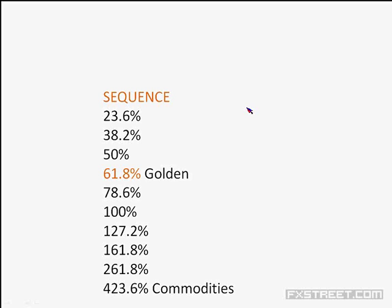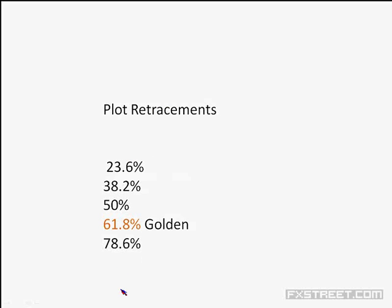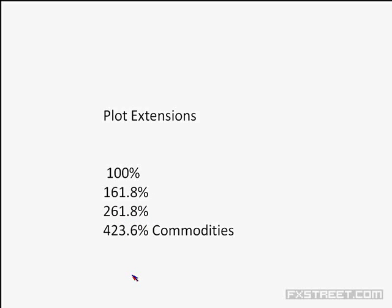The sequence is basically 100%. These are our retracement numbers: 23.6, 38.2, 50, 61.8% — the golden ratio — 78.6, 127.2, 161.8, and 261.8. Most chart packages will only go to 261.8. 423.6 is an extension level normally used for commodity pairs, like the Aussie dollar and the dollar CAD.